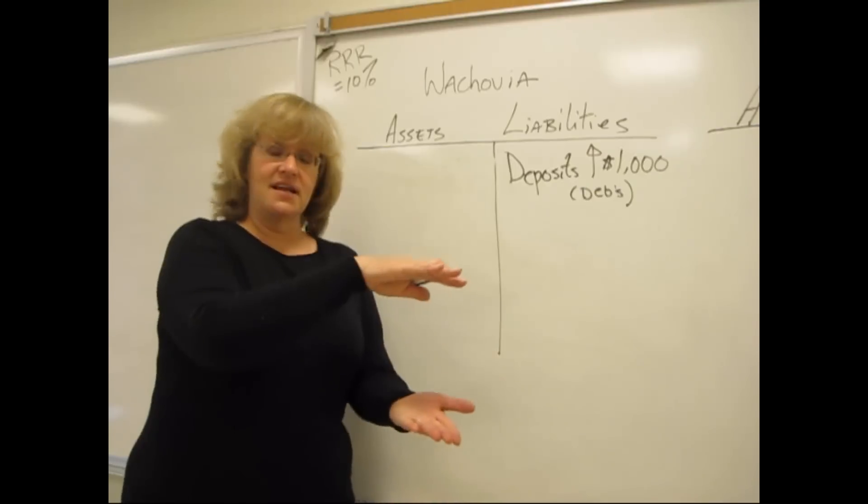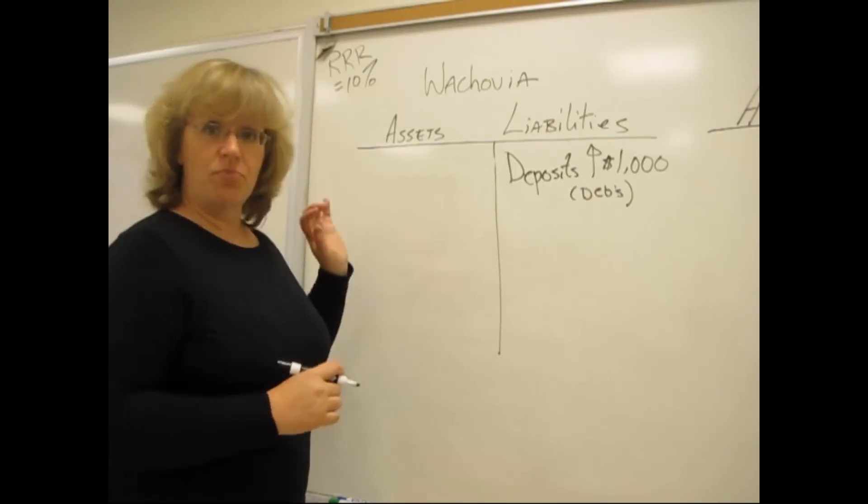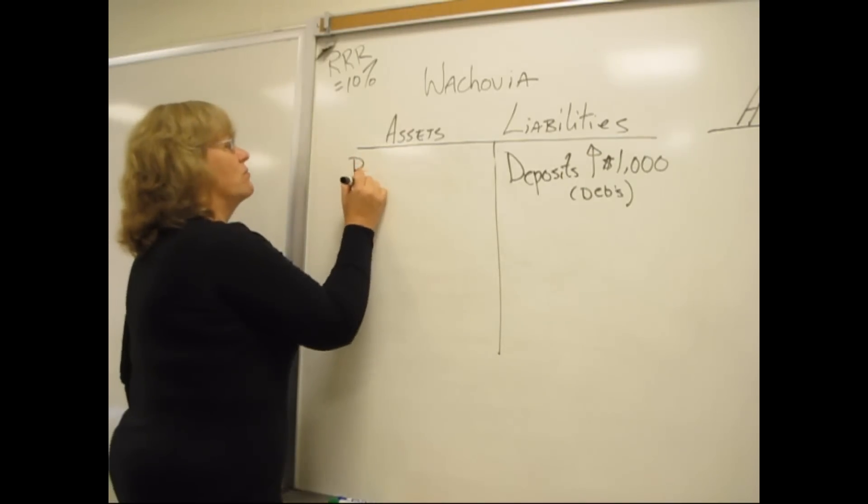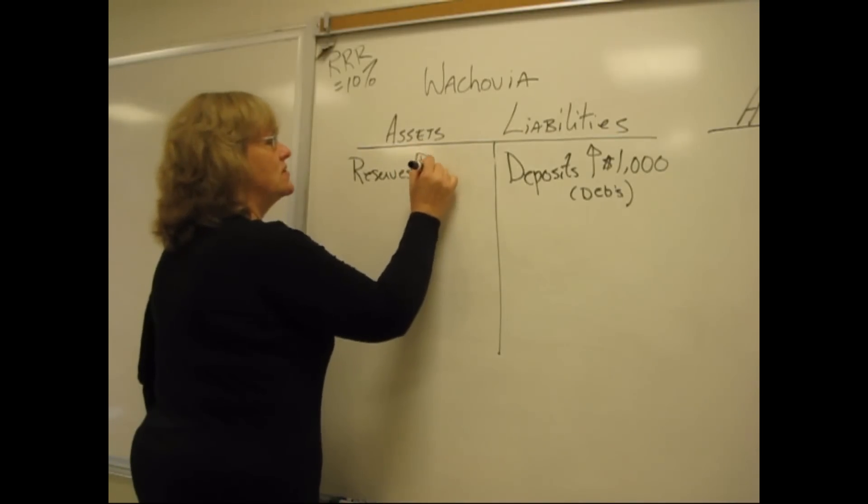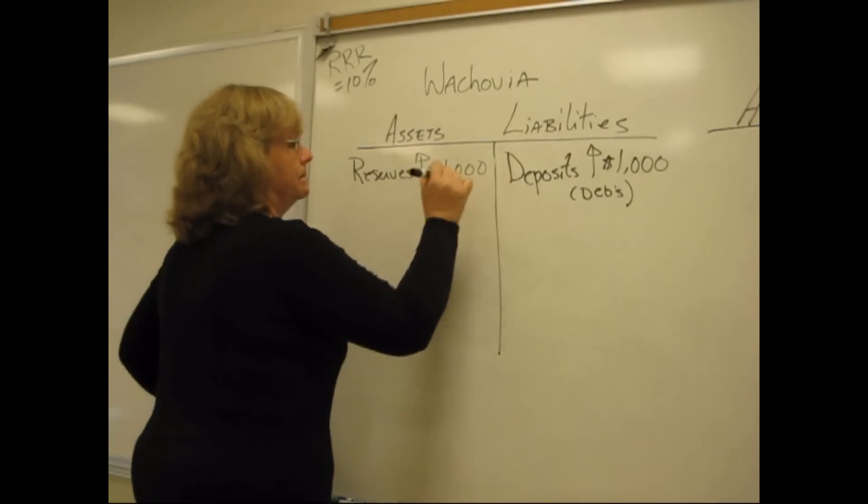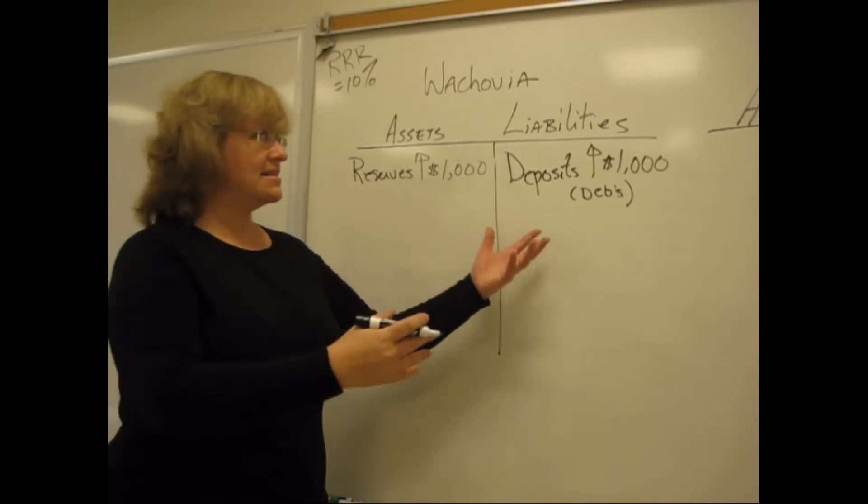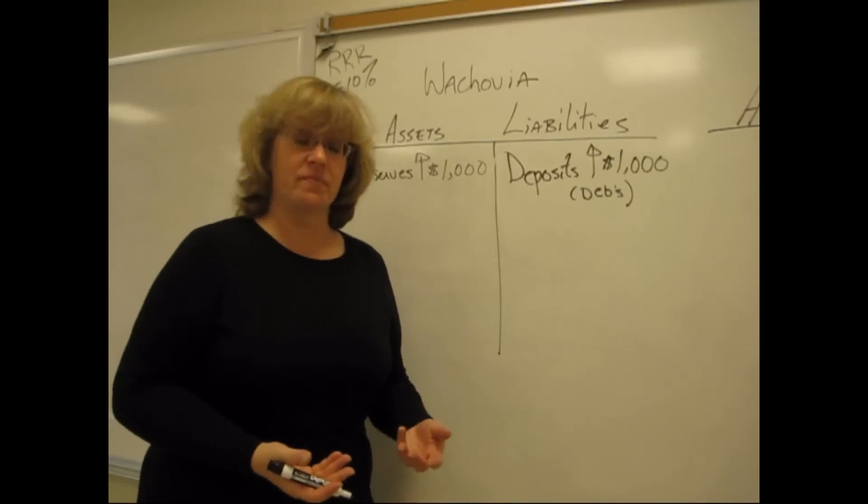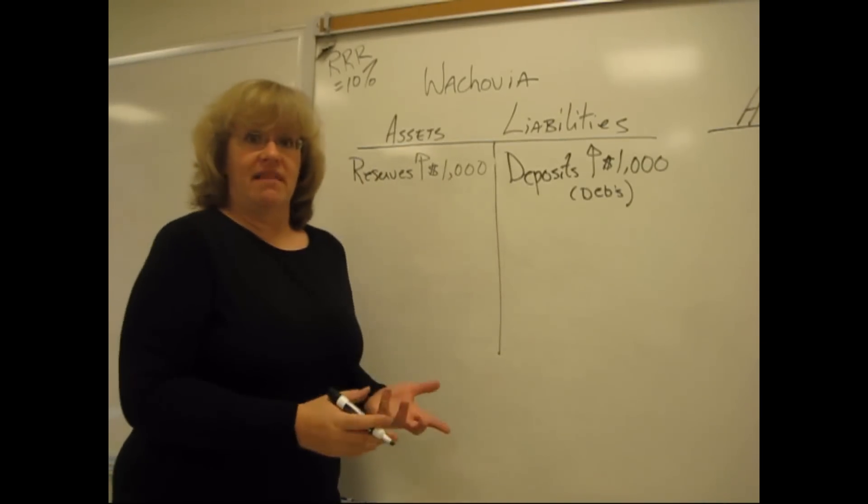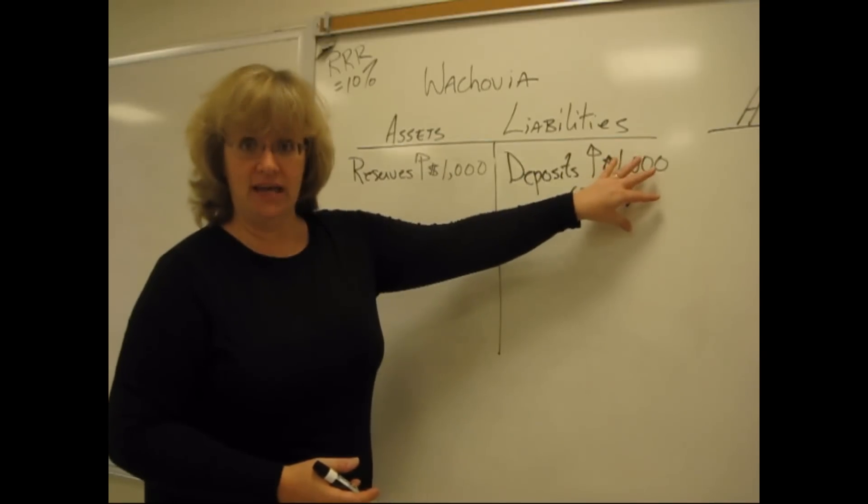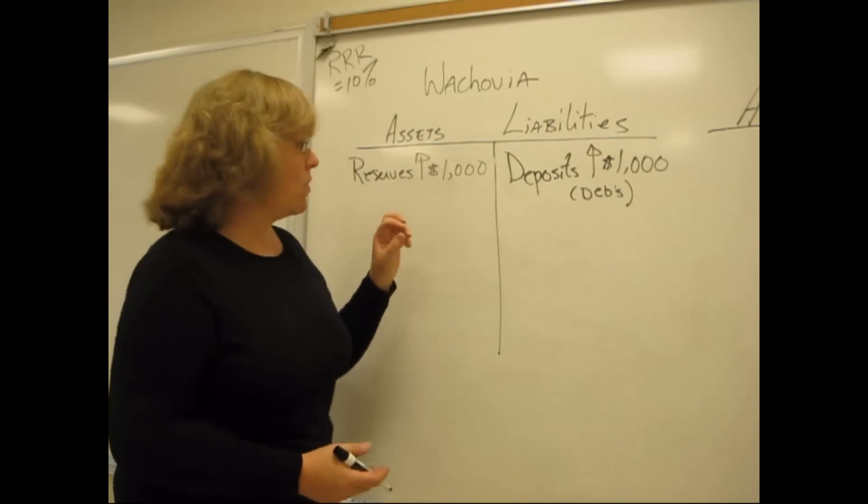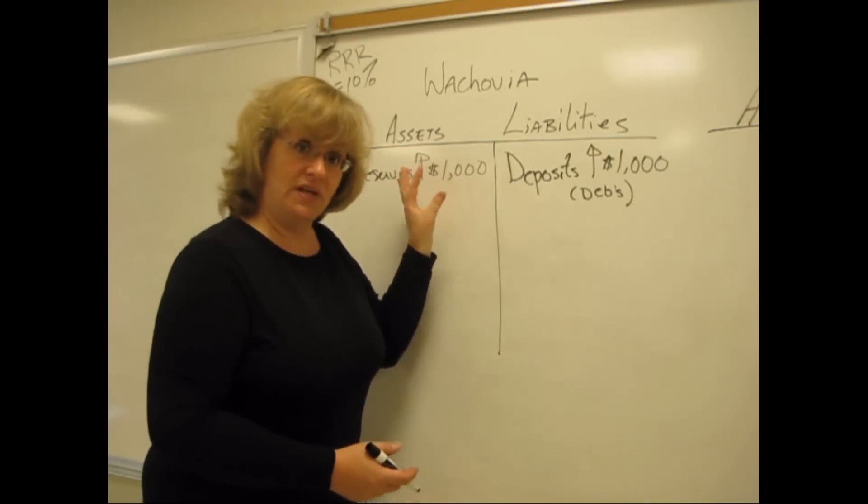Now, Wachovia has a nice little pile of green bills. They're going to put it in their vault, and so their reserves will also rise by $1,000. Assets and liabilities balance, like they're supposed to. That $1,000 is two things at the same time. It's my checking account money that they've got to give me back when I want it, and it's also green bills sitting in their reserves.